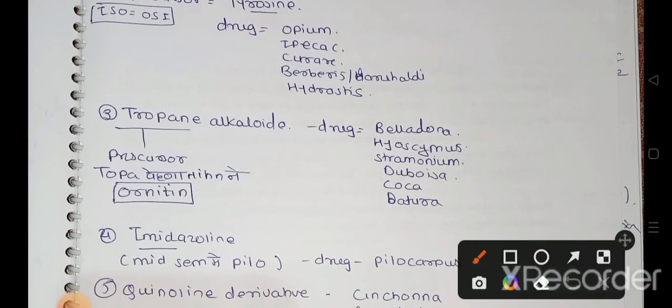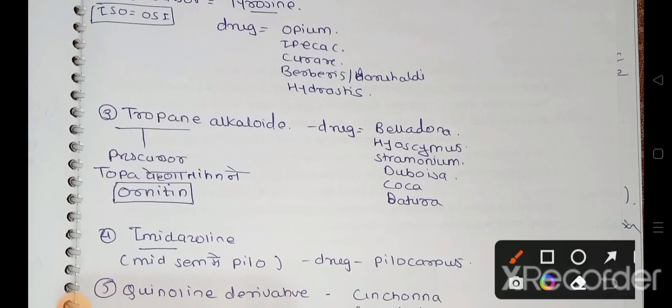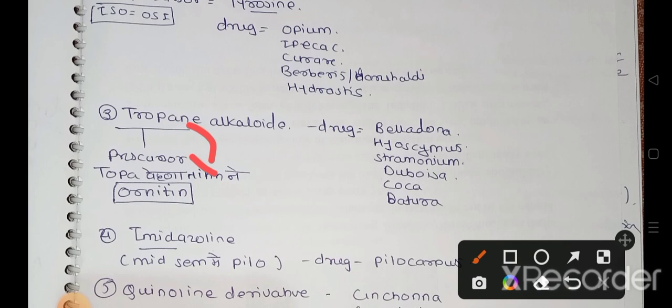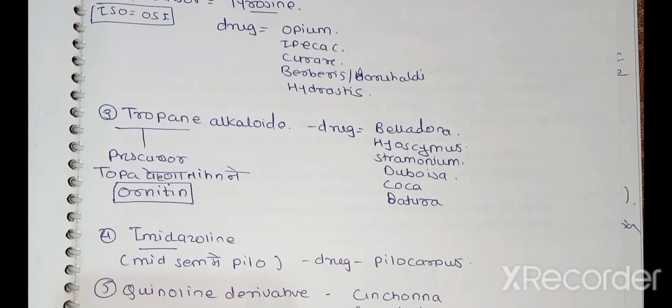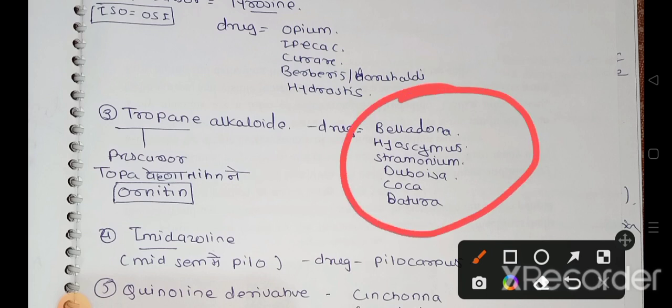After that, tropane alkaloids. For tropane alkaloids, the precursor used is ornithine. What was the trick? Nitin was using tropane - ornithine. Drugs that come under tropane alkaloids are belladonna, hyoscyamus, stramonium, duboisia, coca, and datura. These drugs come under tropane alkaloids.